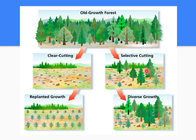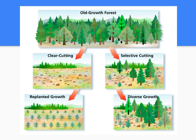Selective cutting is where you don't cut everything down — you leave some mature trees, some young trees, some in-between trees, and then replant sporadically throughout, creating a more biodiverse forest ecosystem. Selective cutting is typically a better way to go.